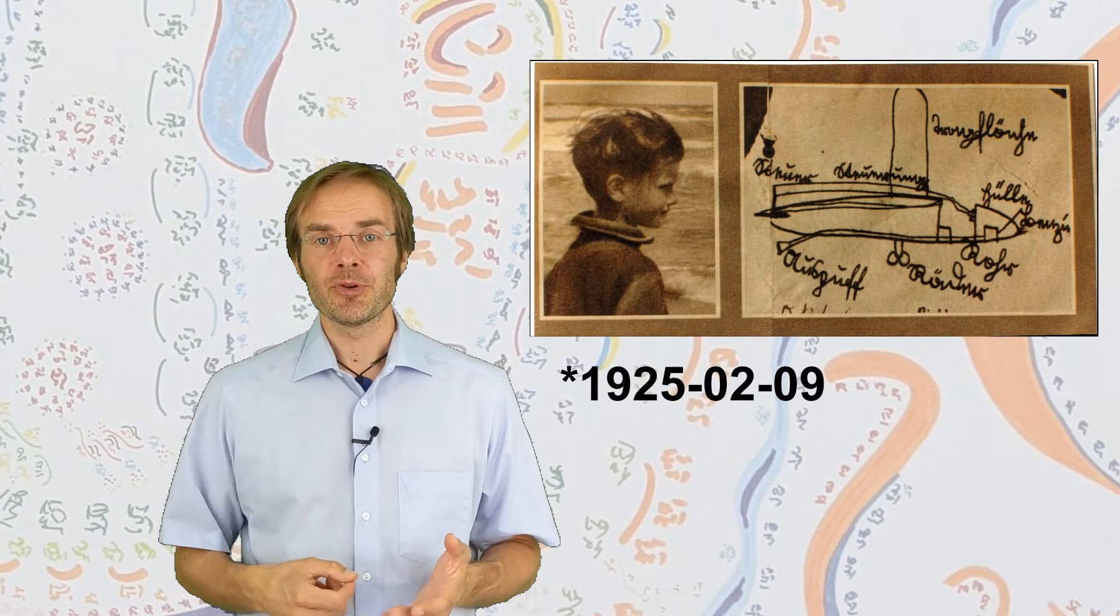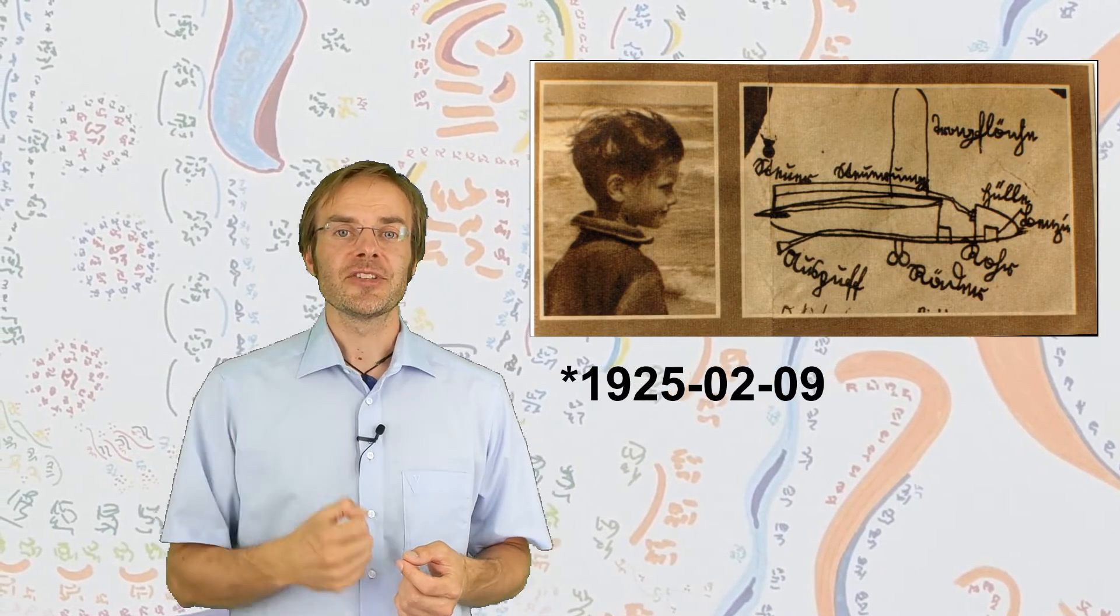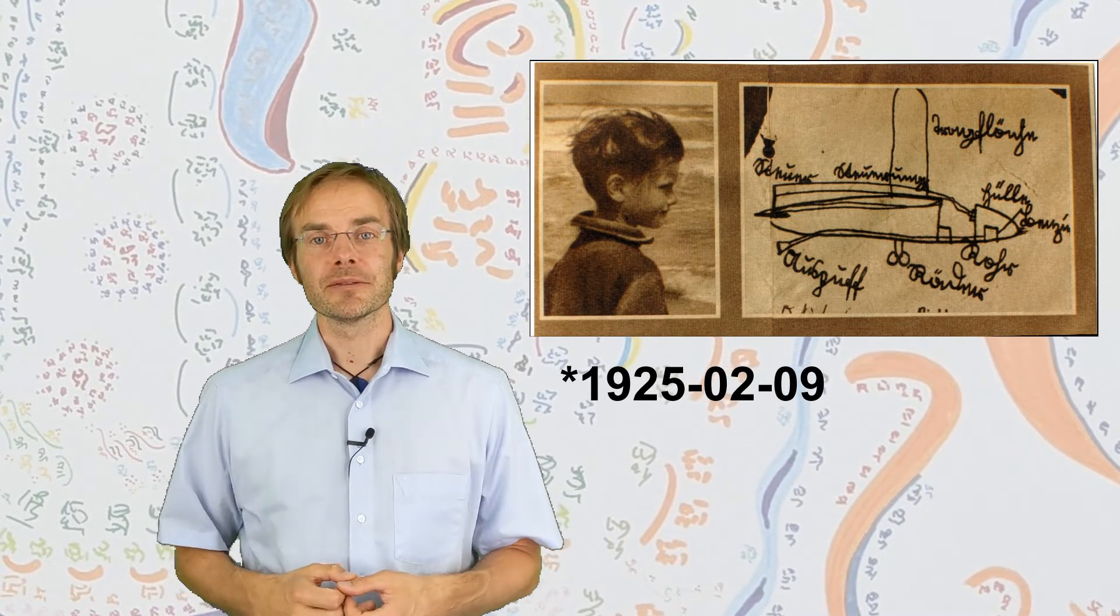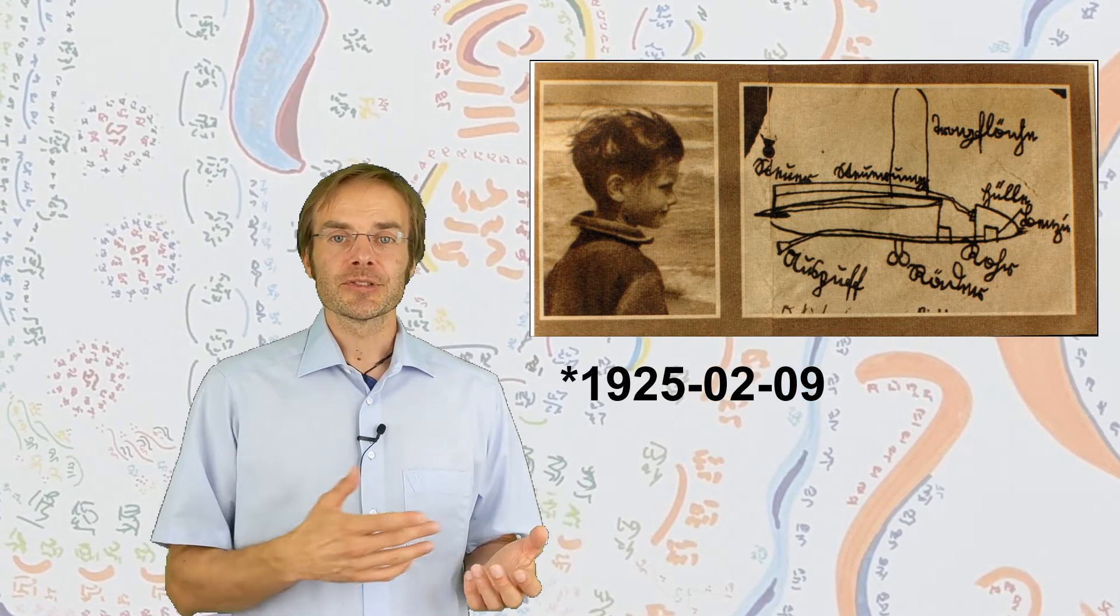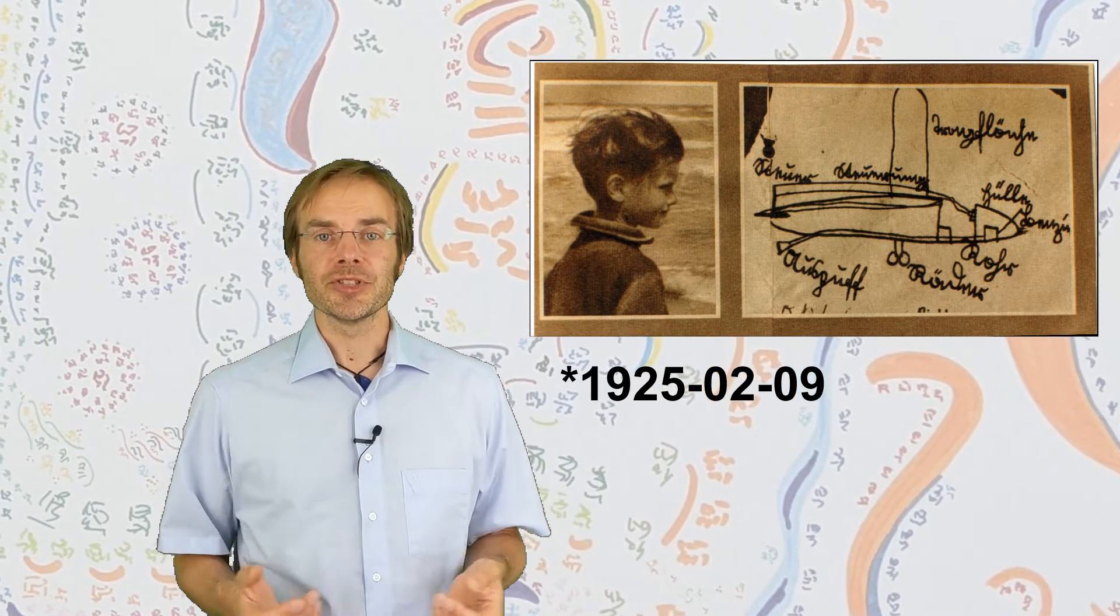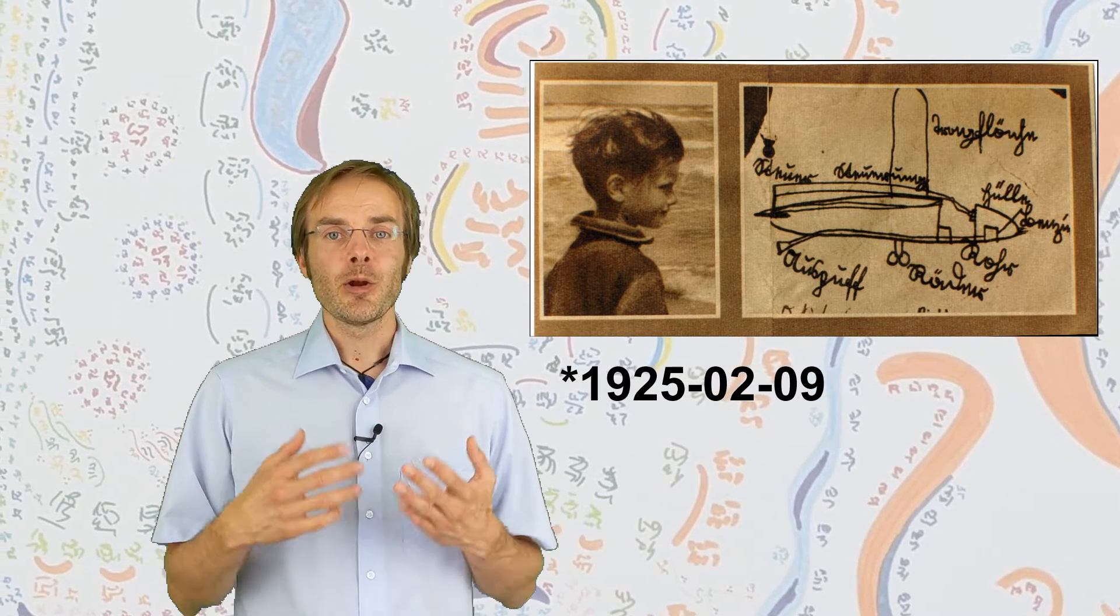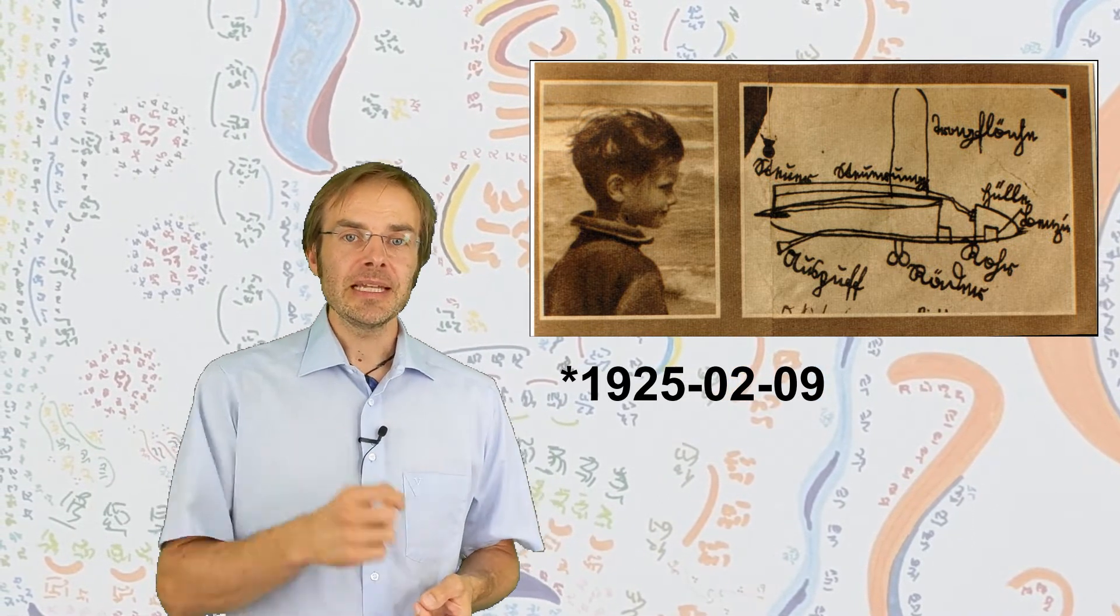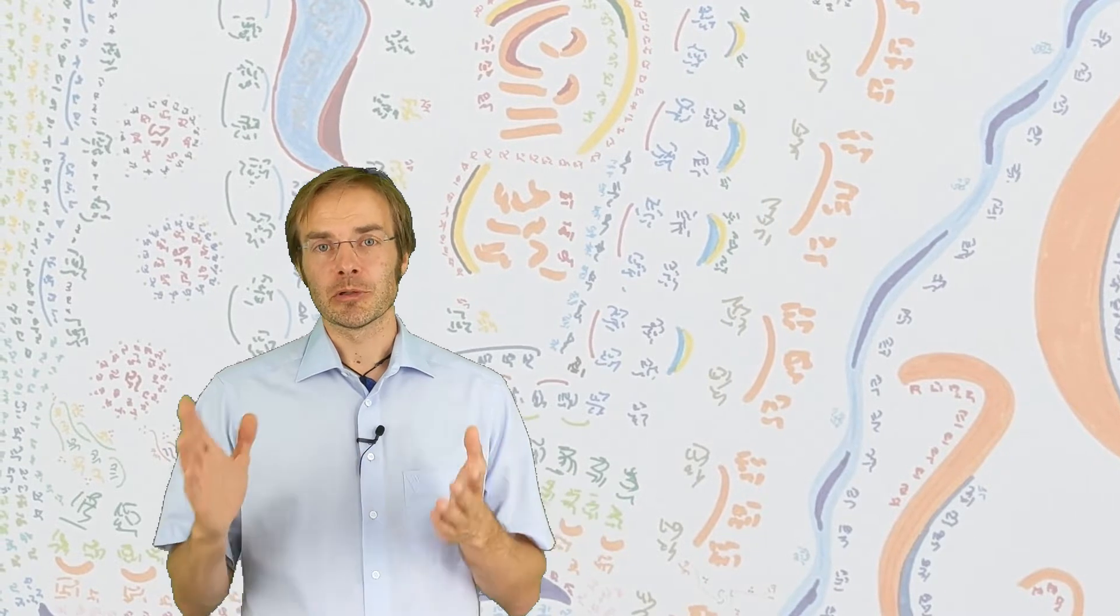Burkhard Heim was born on the 9th of February 1925 in the German city of Potsdam, which is close to Berlin. Today we would say he was highly gifted or a child prodigy. He could read and write long before he started school and was mainly interested in chemistry or mainly explosives actually, and space travel and astronomy.